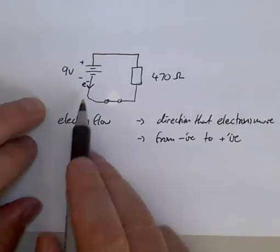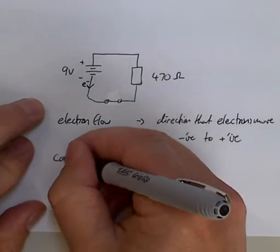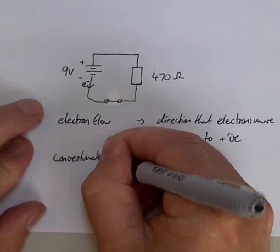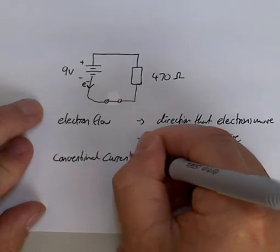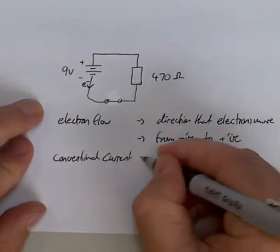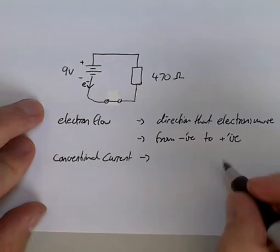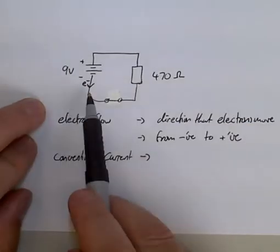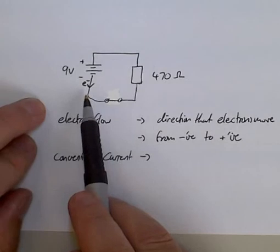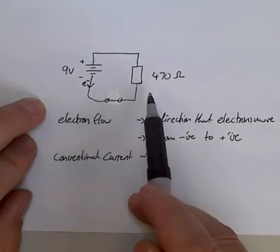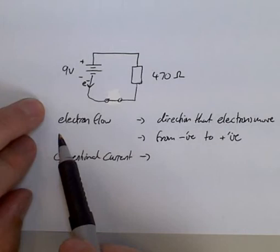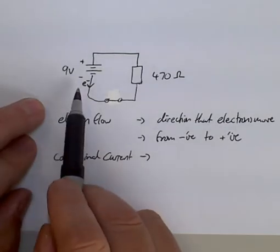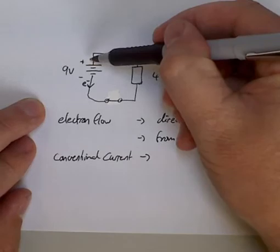However, we have what we call conventional current, and that's simply the opposite direction. And that's the result of, historically, they didn't know whether it was the electrons that were moving or the positively charged particles that were moving in the metals. And they had a guess and they got it wrong. So they theorized that it was positively charged particles that were moving, and therefore they would have to be going from positive to negative.